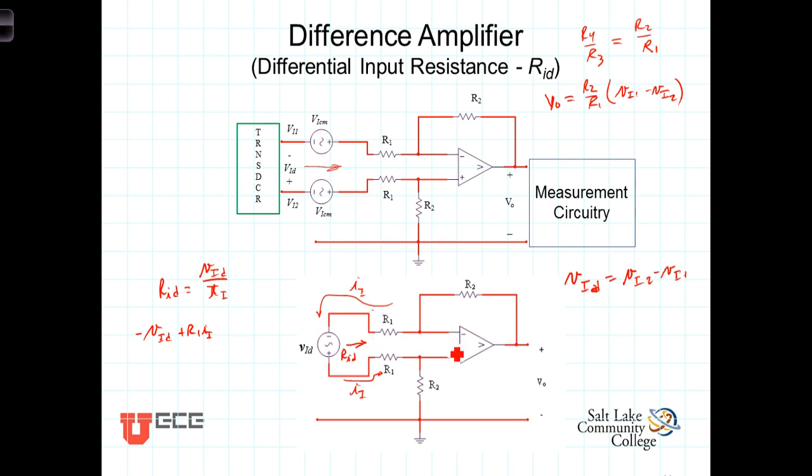Now we've got the virtual short across here, so we're going to just say plus zero going across there. Continue on around the loop in the direction of current flow gives us another plus R1 I N. Brings us back to where we started and so the sum of those terms must equal zero.